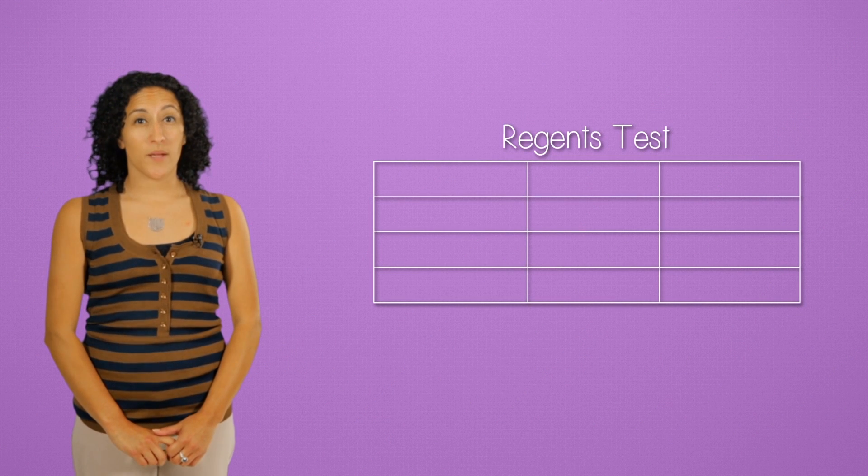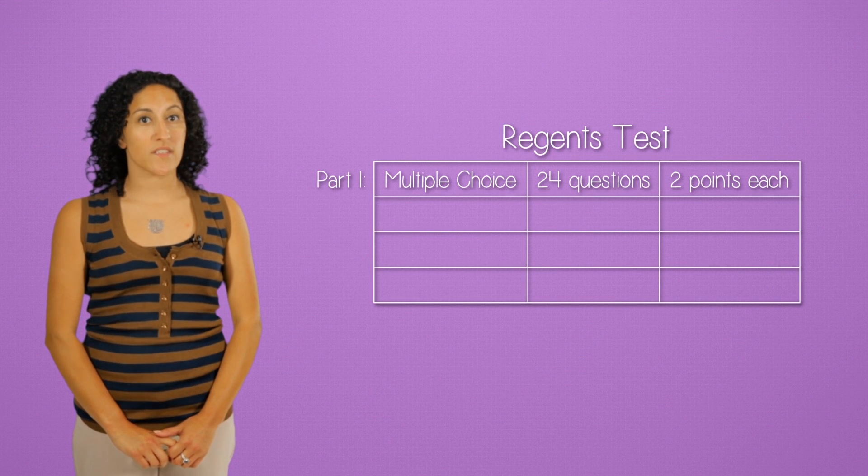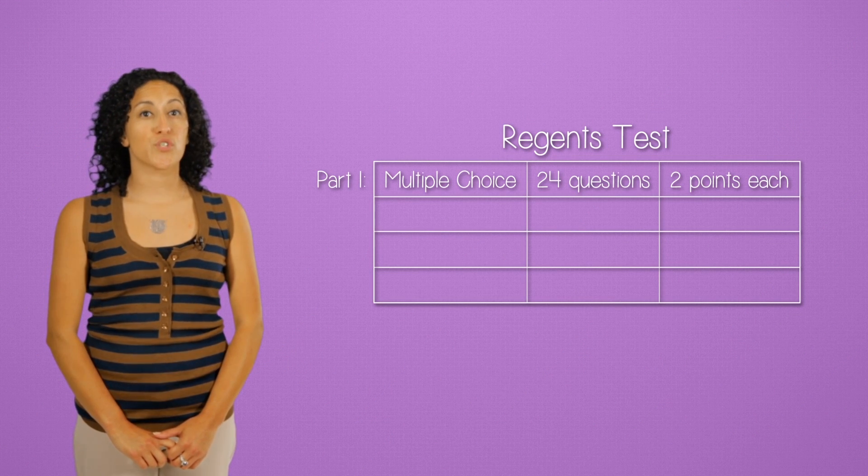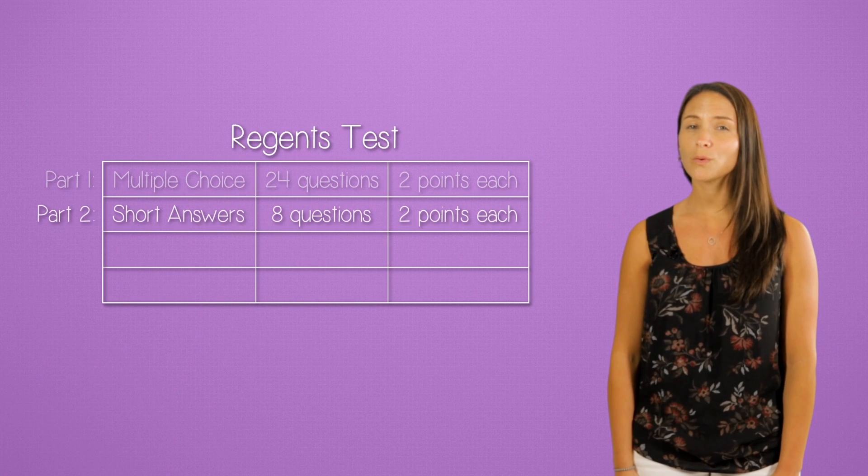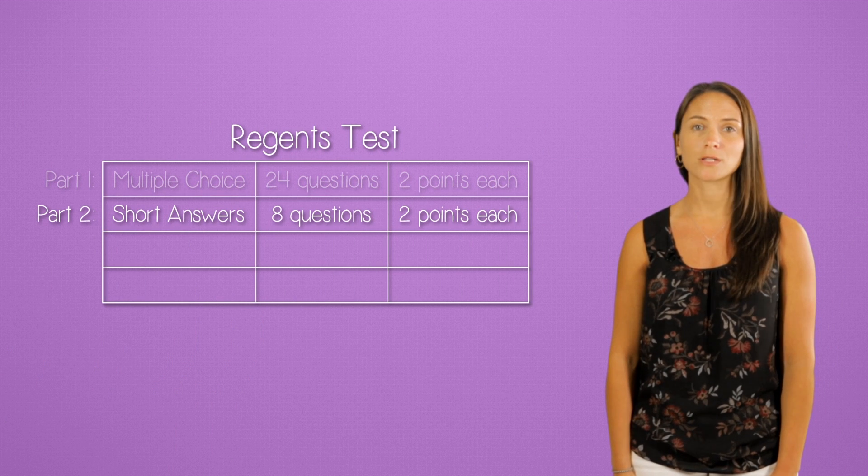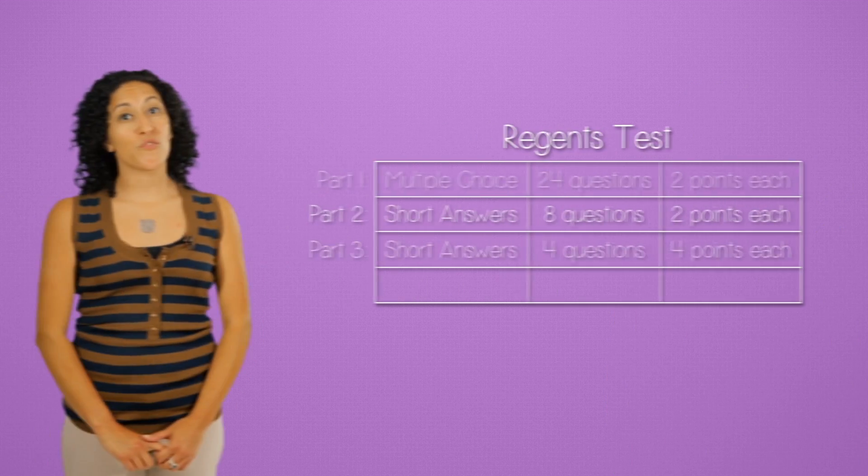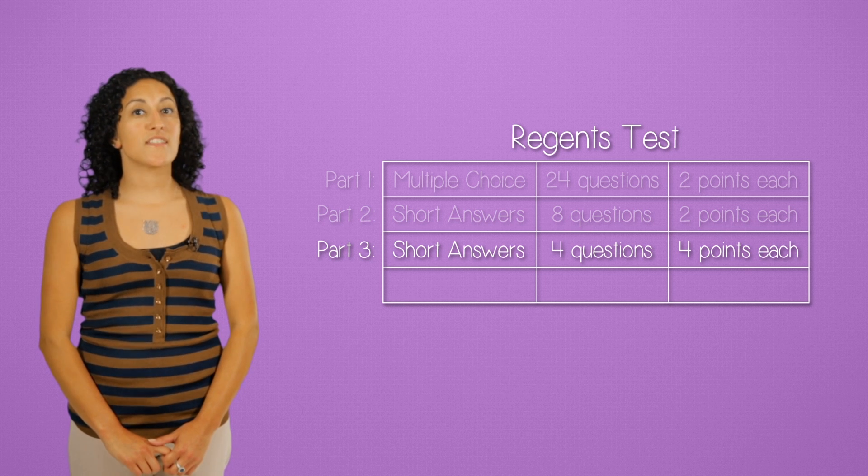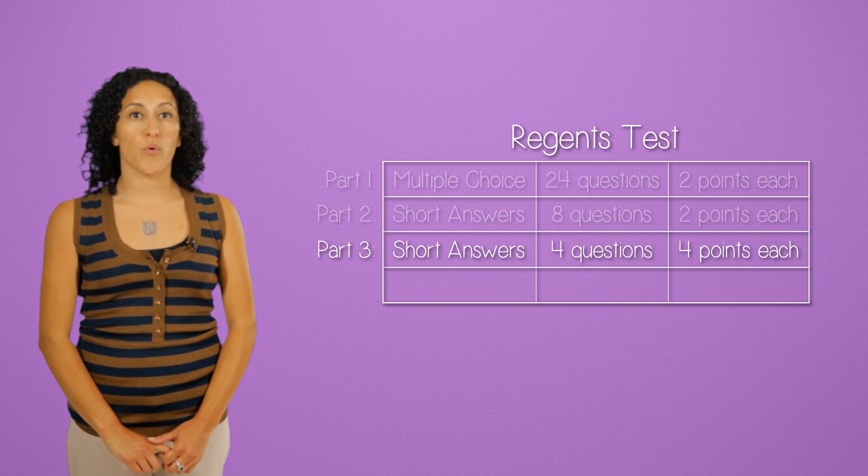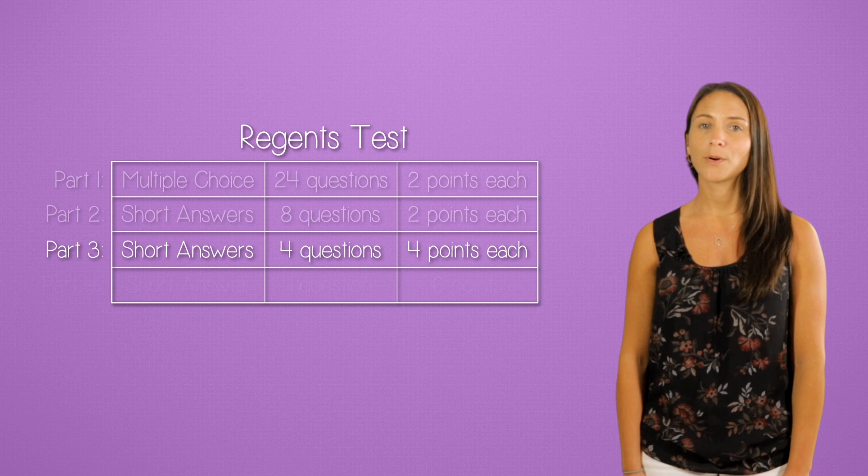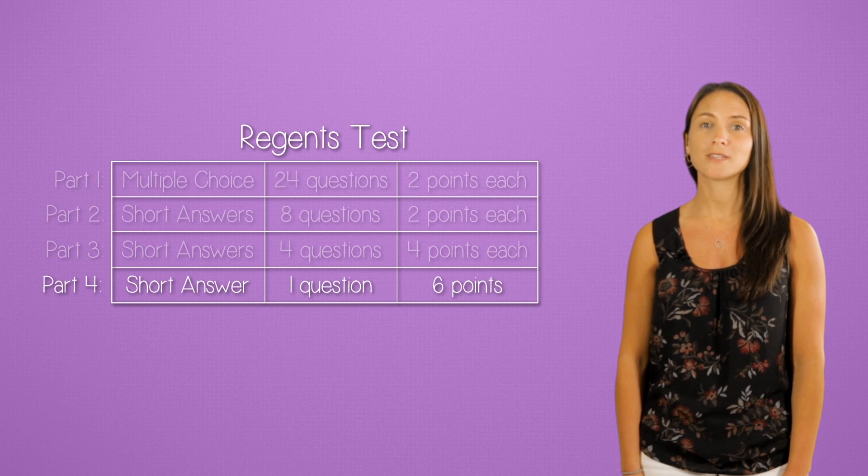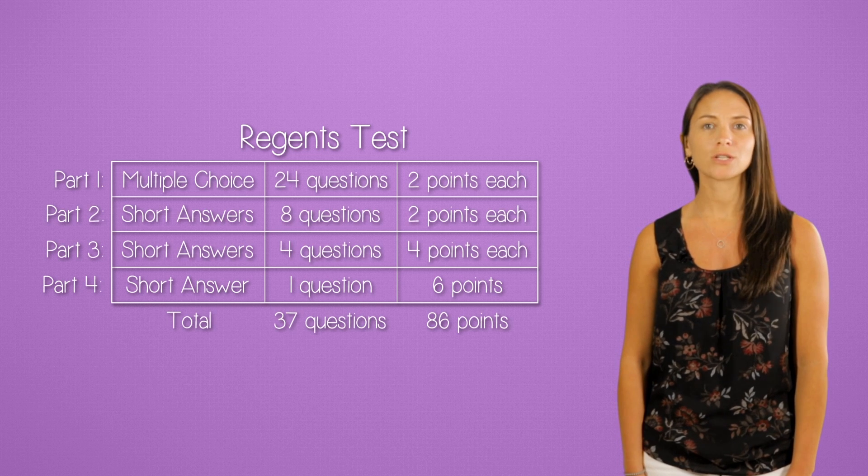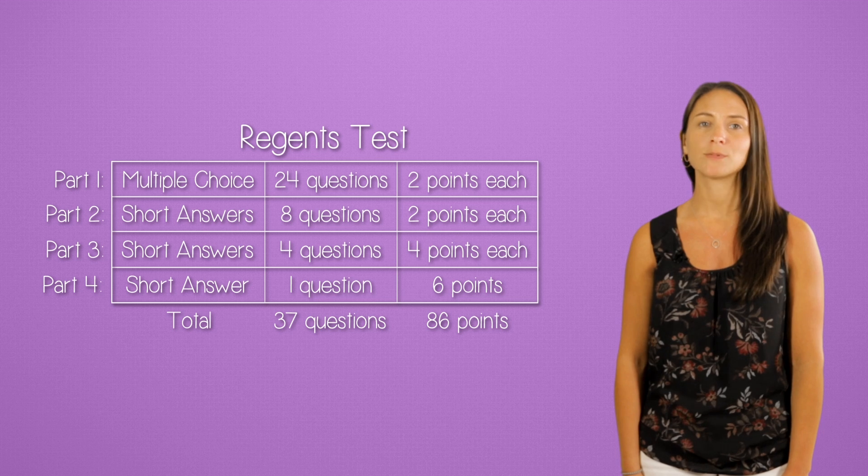Here's what you're going to see. Part 1 is multiple choice, with 24 questions worth 2 points each. Part 2 is short answer, with 8 questions worth 2 points each. Part 3 is also short answer, this time with 4 questions worth 4 points each. And lastly, Part 4 is one question worth 6 points. In total, the Regents has 37 questions that add up to 86 points.